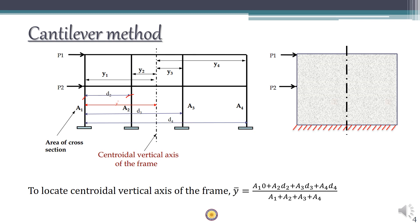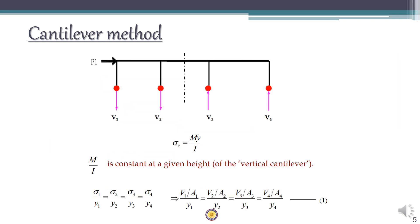The first thing to be done is to locate the central axis of the frame. Let's say the central axis is at a distance of Y-bar from the first column, and each column has areas A1, A2, A3, and A4, located at distances D2, D3, and D4 from the first column respectively. We use the centroid formula: Y-bar equals (A1×0 + A2×D2 + A3×D3 + A4×D4) divided by (A1 + A2 + A3 + A4). Once we locate the neutral axis, we can apply the beam theorem.